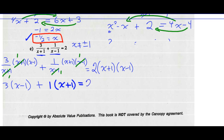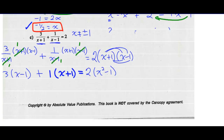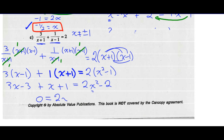On the right side I'm not reducing, so I'm just expanding: 2 times x plus 1 times x minus 1 gives a difference of squares, x squared minus 1. So let's complete the simplification: 3 times x minus 1 is 3x minus 3, plus 1 times x plus 1 is x plus 1, and the right side gives 2x squared minus 2. This is a quadratic equation. Set it equal to 0, moving to the right: 2x squared minus 4x plus 0.